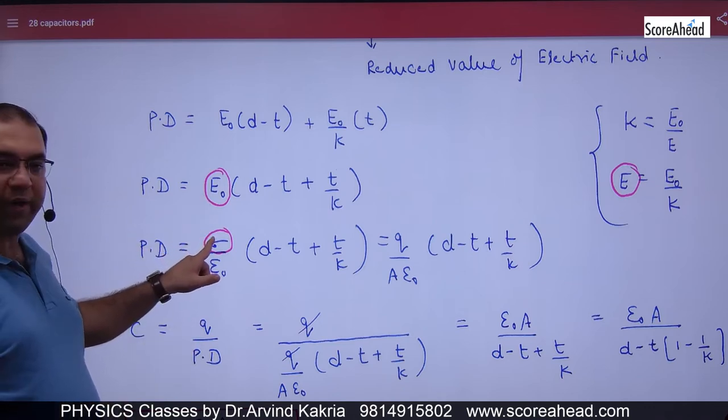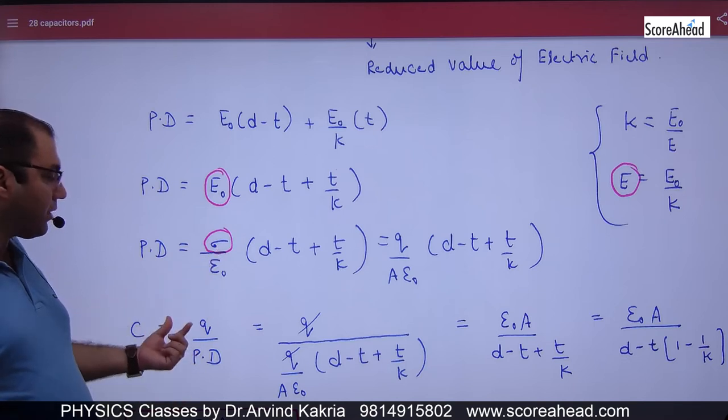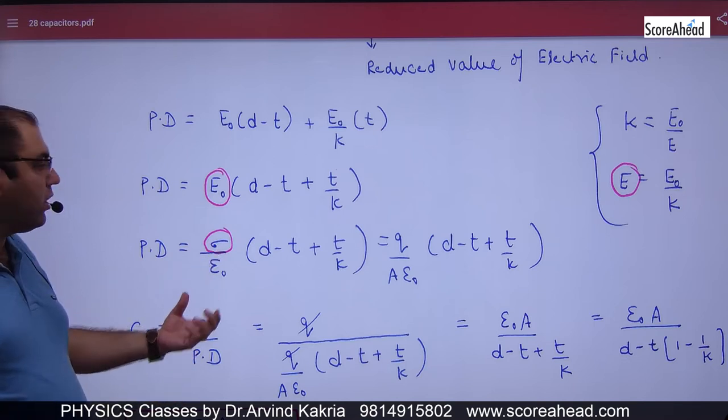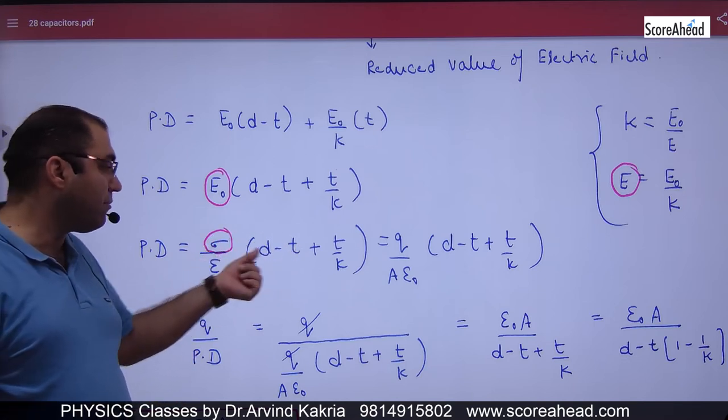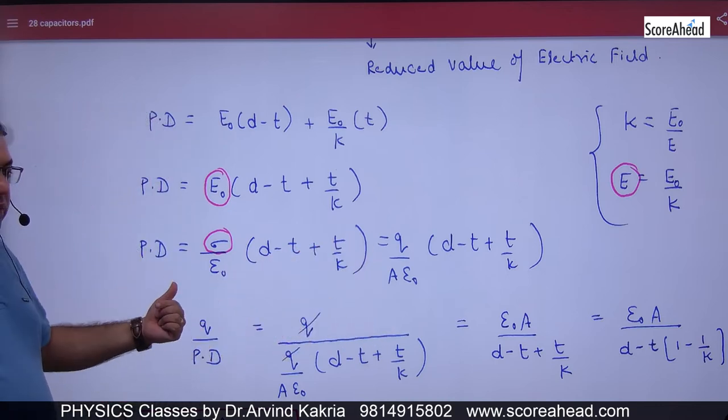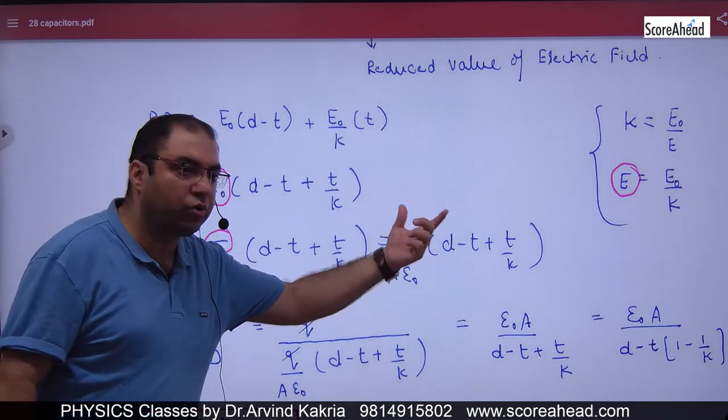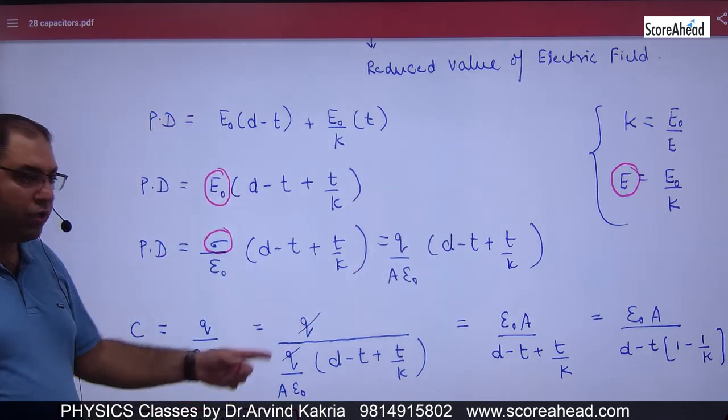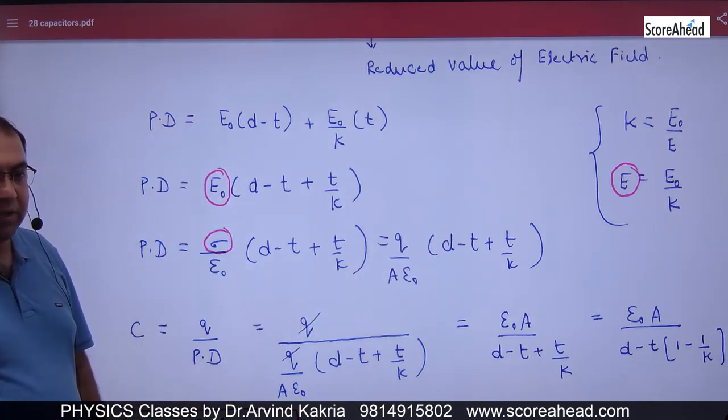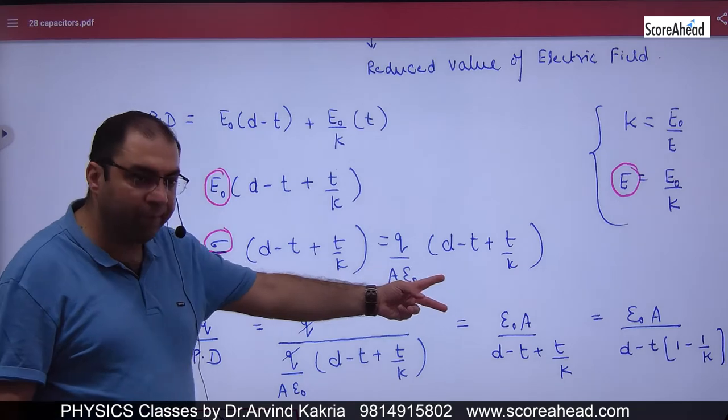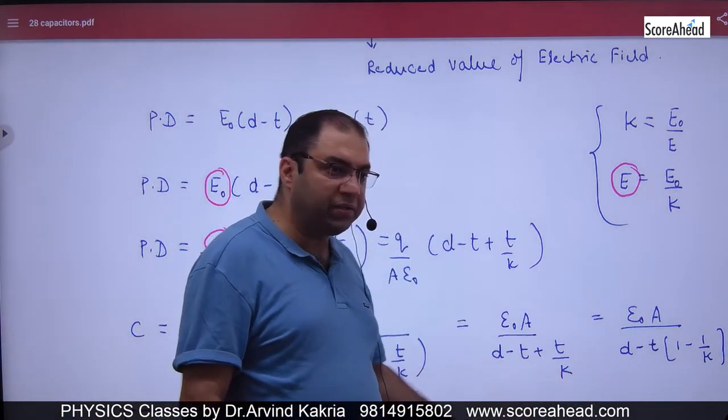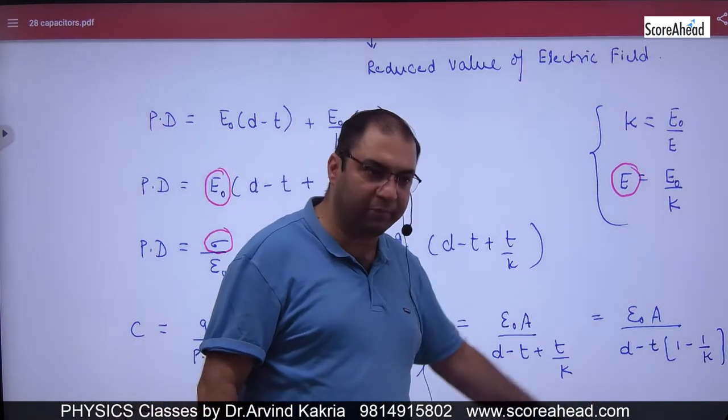Sigma is charge by area. To find capacitance, divide Q by this potential difference. Sigma has charge by area. What will be the capacitance? Q divided by this potential difference. Q and Q cancel. Epsilon0 A has come up here. What is minus T? 1 minus 1 by K.